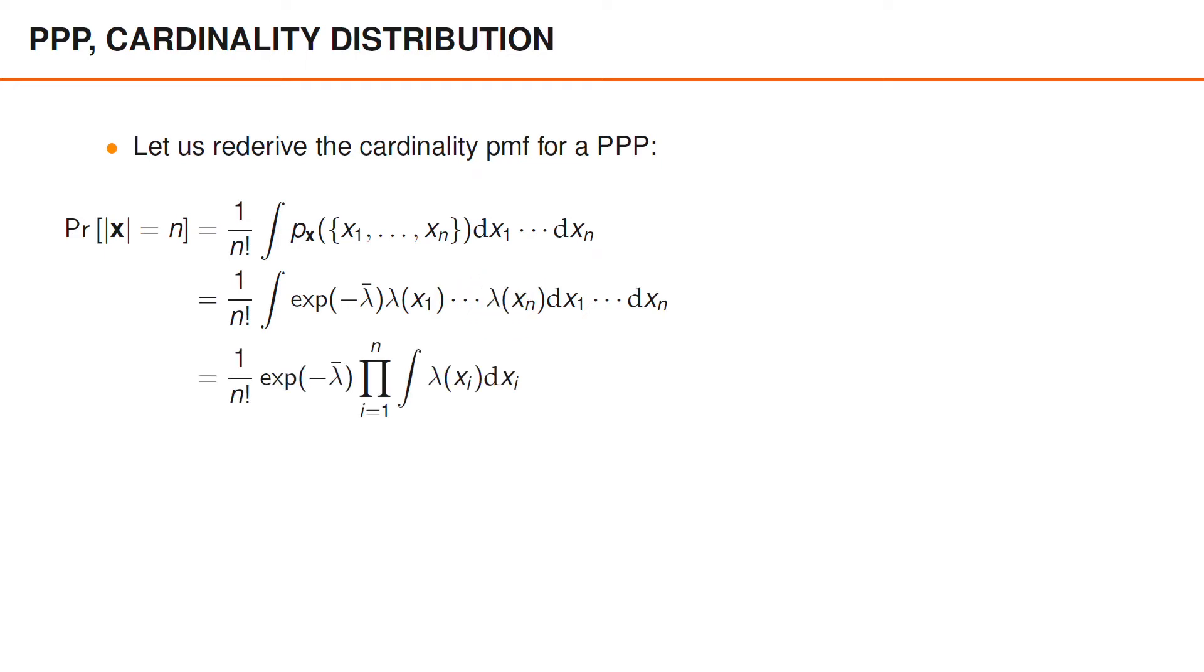Now, since the integrand is a product of factors that only depend on one of the variables xi, the joint integral can be written as a product over i from 1 to n of the integral over lambda of xi. Of course, the integral over lambda of xi is simply the Poisson rate lambda bar, and the product over these n integrals is therefore simply lambda bar to the power of n.